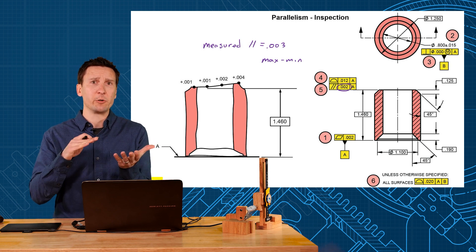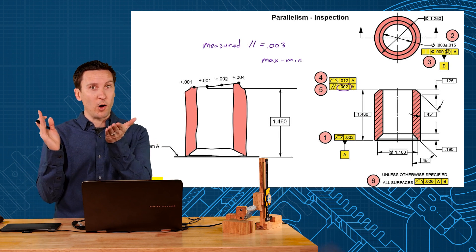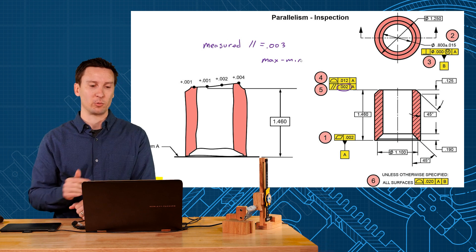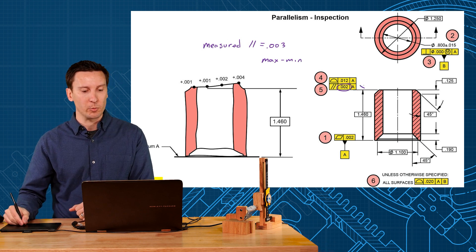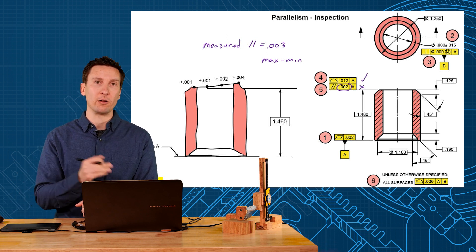Remember TIR, total indicator reading? If it comes in plus 4, plus 1, that total range there is 3. So that would fail. We would pass our profile tolerance and fail our parallelism.